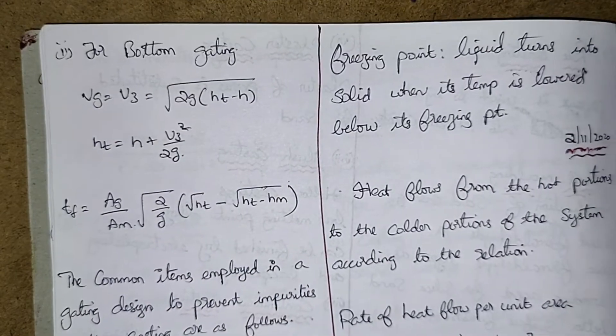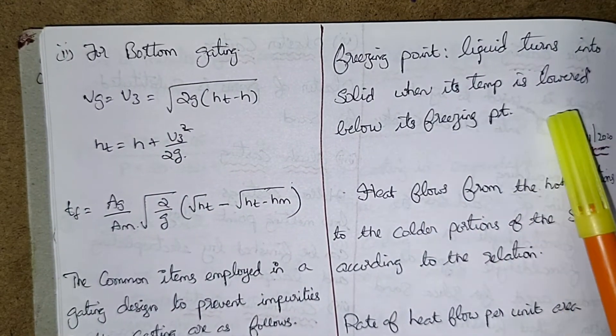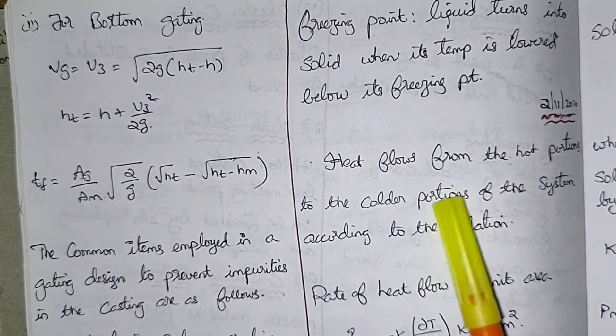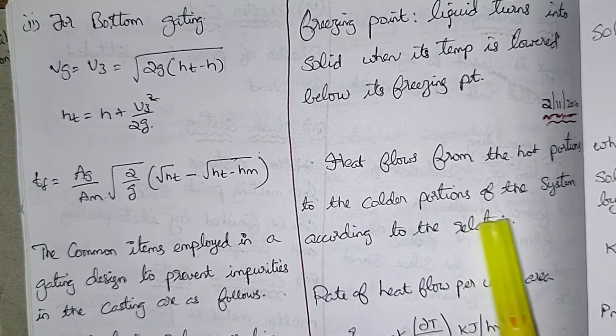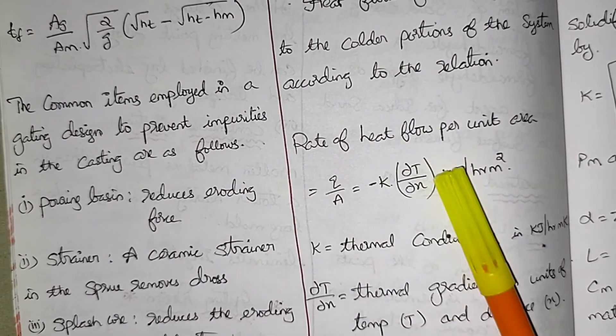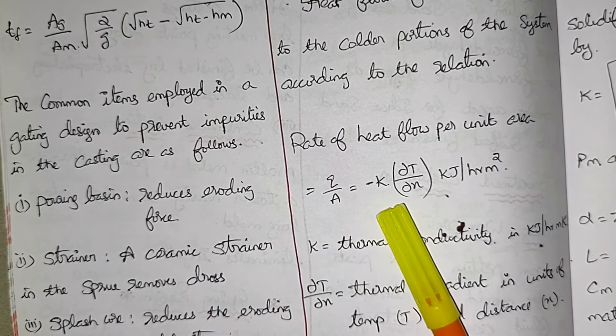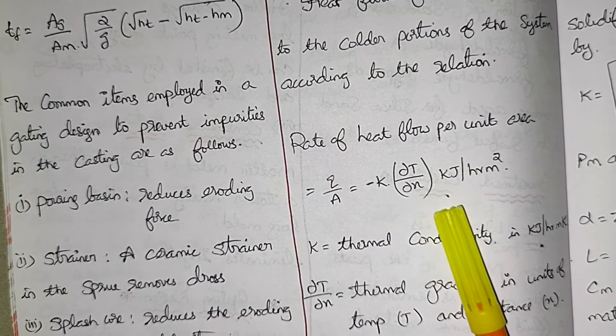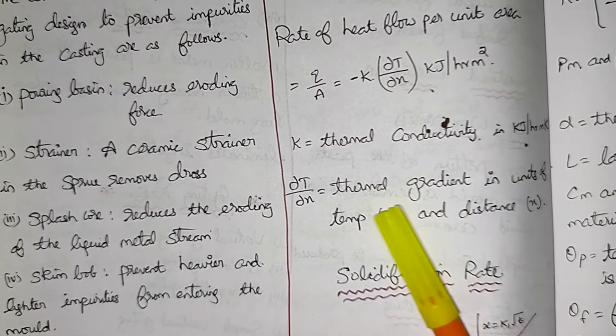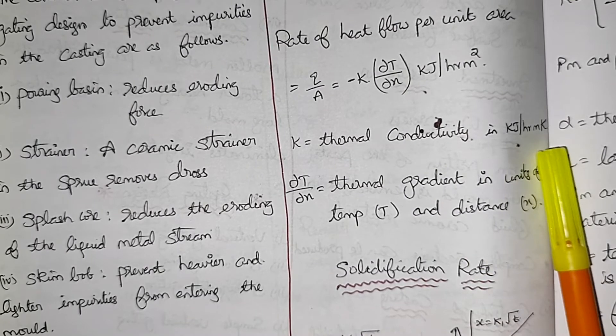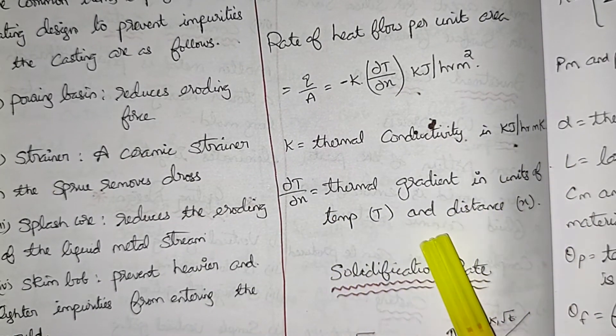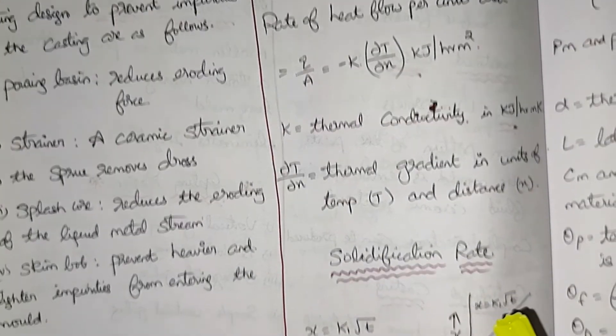Now freezing point. Liquid turns into solid when its temperature is slowed below its freezing point. Heat flows from the hot portions to the colder portions of the system according to the relation. Now next, rate of heat flow per unit area is q by a is equal to minus k into dθ by dx kilojoules per hour meter square. K is thermal conductivity in kilojoules per hour meter kelvin. And dθ by dx is thermal gradient in units of temperature T and distance x.